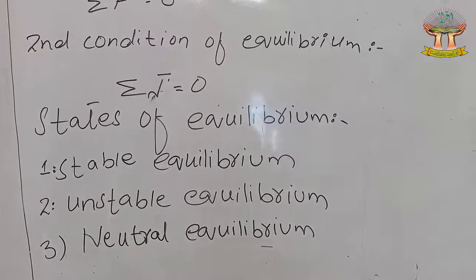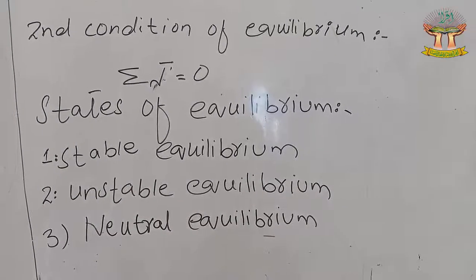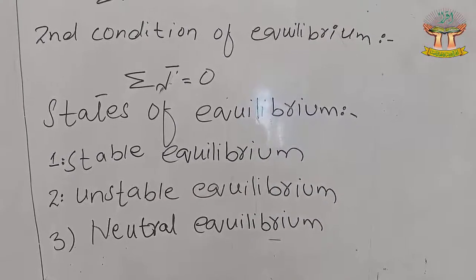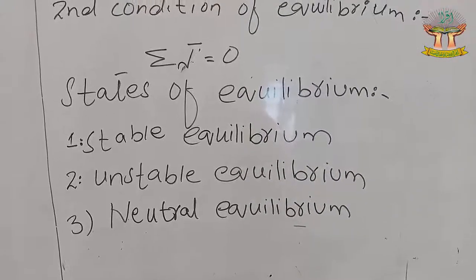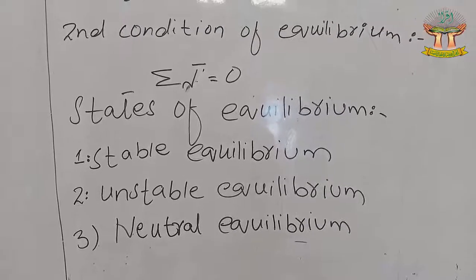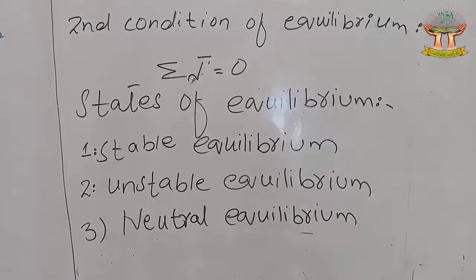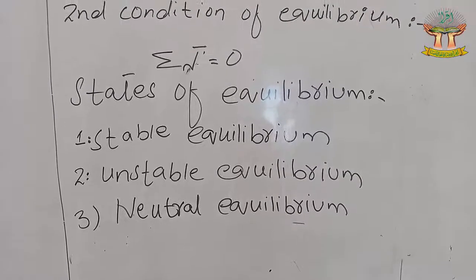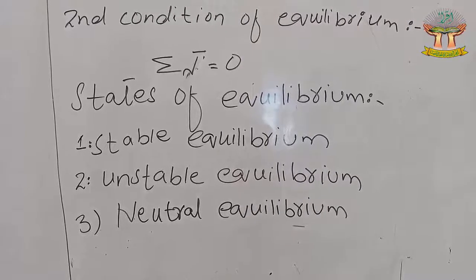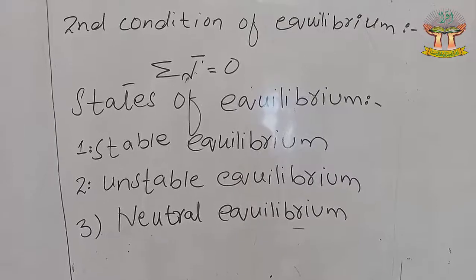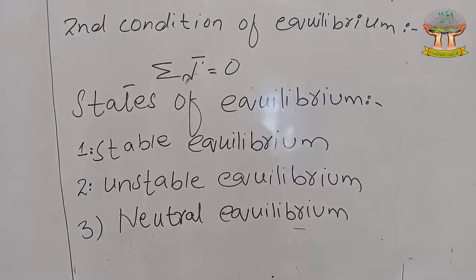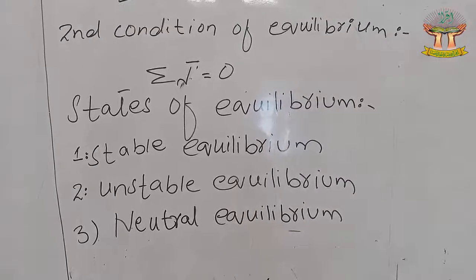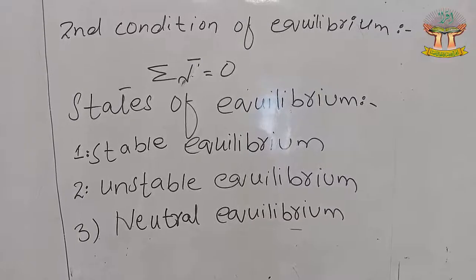Detailed examples of both conditions will be covered in class. Our next topic is states of equilibrium. There are three states: stable equilibrium, unstable equilibrium, and neutral equilibrium. Stable equilibrium is when the center of gravity of a body lies below the point of suspension or support. When a body changes its position but returns to its original position, it is in stable equilibrium.